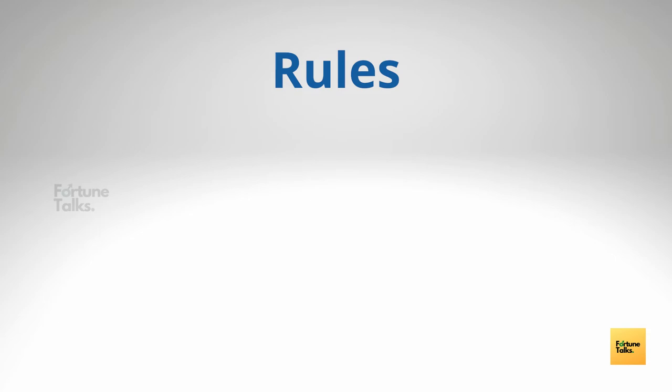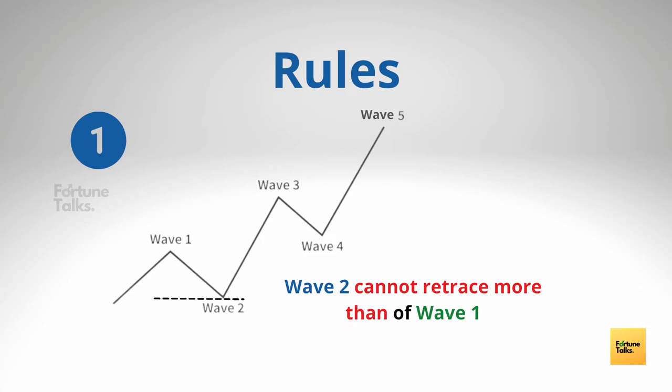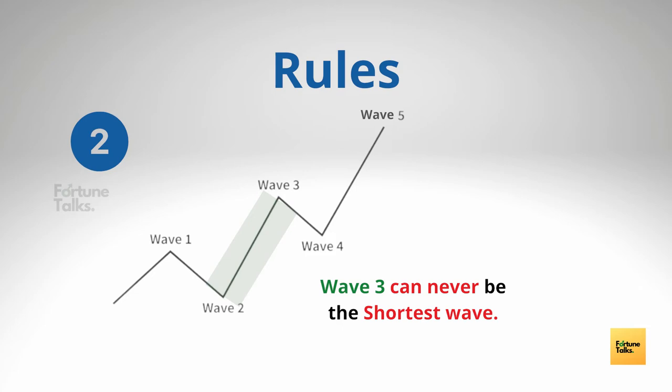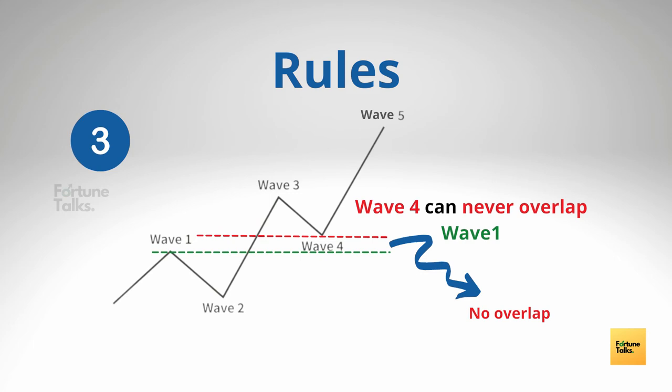These rules are really crucial because if any of them are violated, the wave formed is not an impulse wave. The three rules for impulse wave formation are: number one, wave 2 cannot retrace more than 100% of wave 1. Second rule, wave 3 can never be the shortest of waves 1, 3, and 5, which means wave 3 has to be either greater than 1 or 5 or both. The final rule is that wave 4 can never overlap wave 1. If all these rules are satisfied, then the wave formed is an impulse wave.